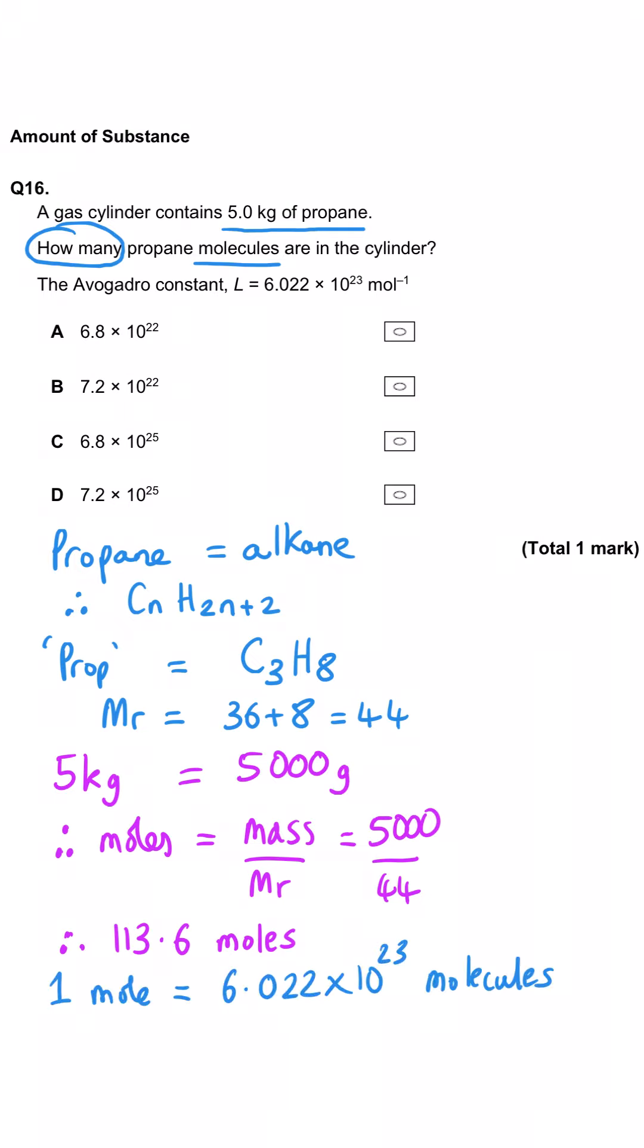Now we've got our mass in grams. We divide by our MR and get 113.6 moles. One mole of molecules of propane contains 6.022 times 10 to the 23 molecules. Therefore, 113.6 moles will have 113.6 times more molecules. We multiply moles by Avogadro's constant and get 6.84 times 10 to the 25. So C is the right answer.